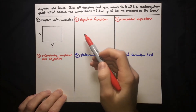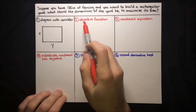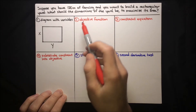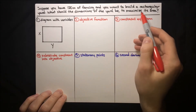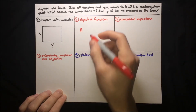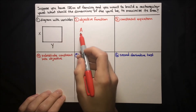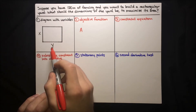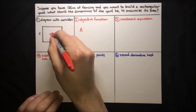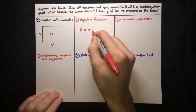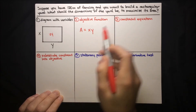Now it's time to write some functions. Our objective function is the thing that we want to maximize or minimize. You can remember it by asking: what is our objective here? Well, we're trying to maximize the area. So the objective function needs to be the area of the yard. We can refer back to our diagram — the area is just the dimensions multiplied. Area is just x times y, so our objective function is area equals x times y.